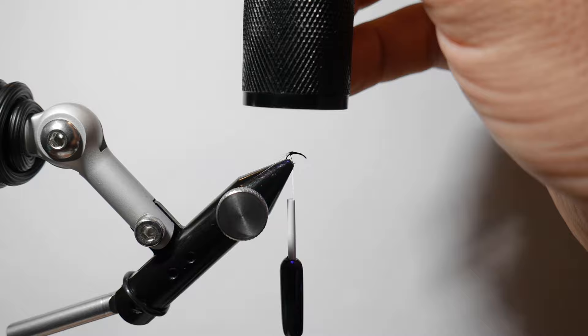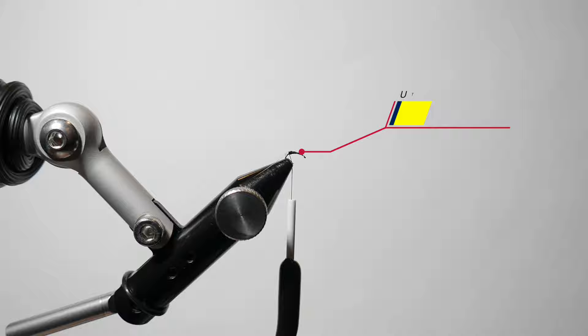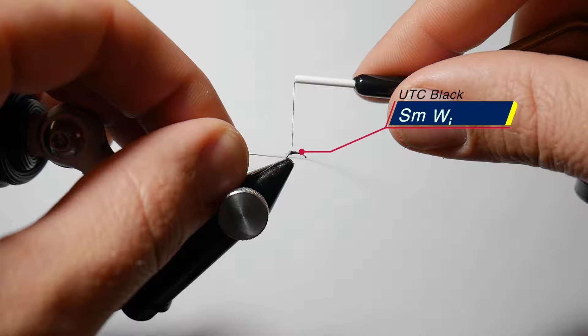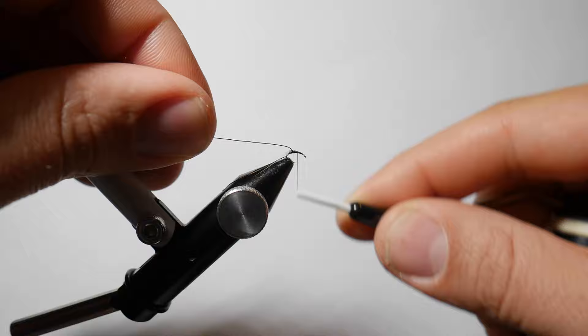And then speaking of another fly tyer, Ed Engle gave me this tip here where you're actually going to tie in a UTC black small wire. Now this is going to help this fly break the surface. So we're just going to line it up on the inside of the hook here and we're going to spin a couple wraps around and then we're going to pull that wire back and roll our thread up to that 80% point.